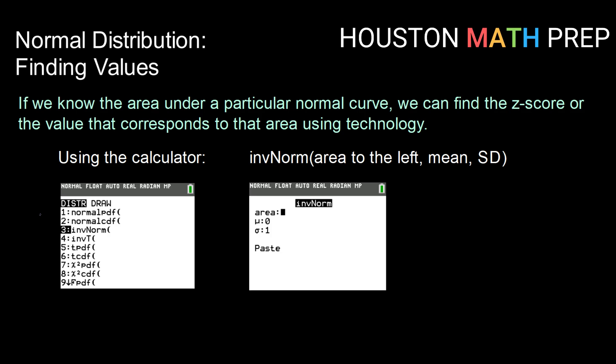Just like we did when we were finding probabilities on a normal distribution, we're going to go into the distribution menu. And this time, since we are given the probability, trying to work backwards to find the value,